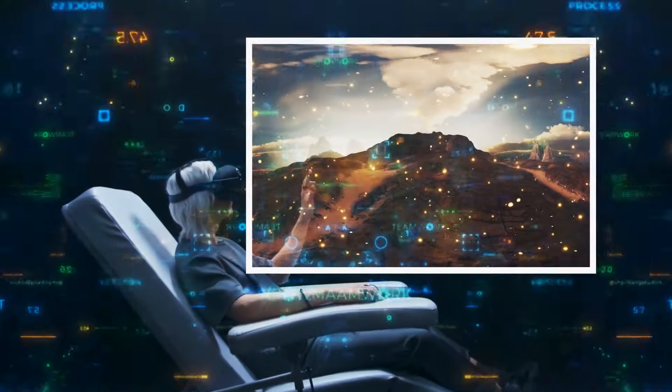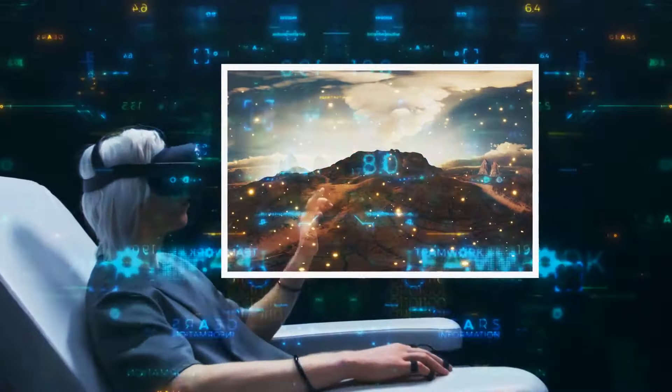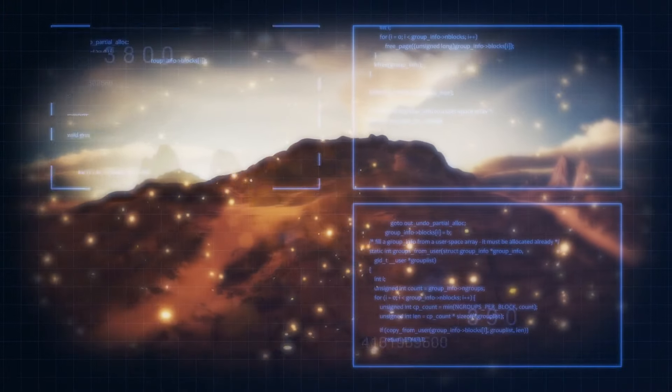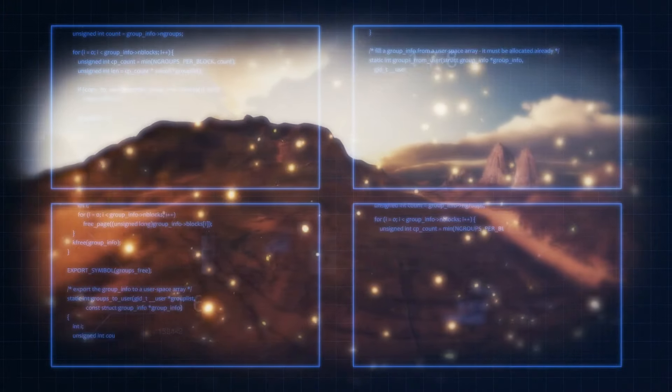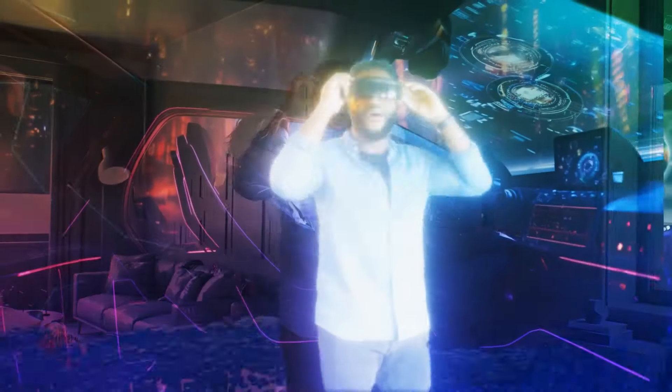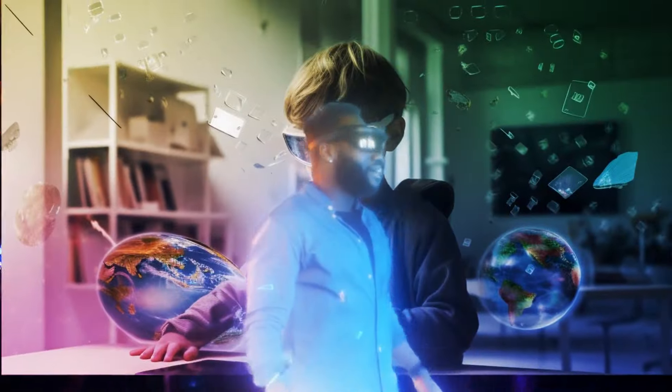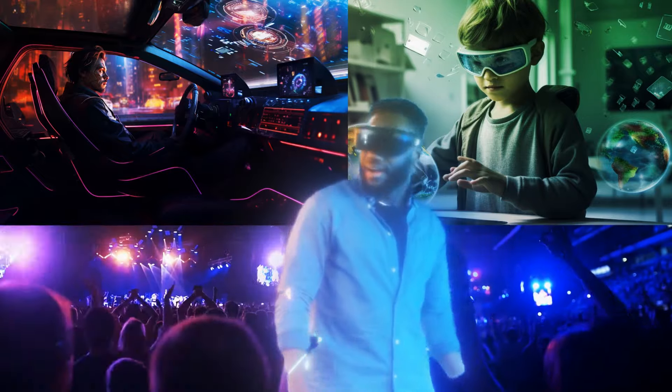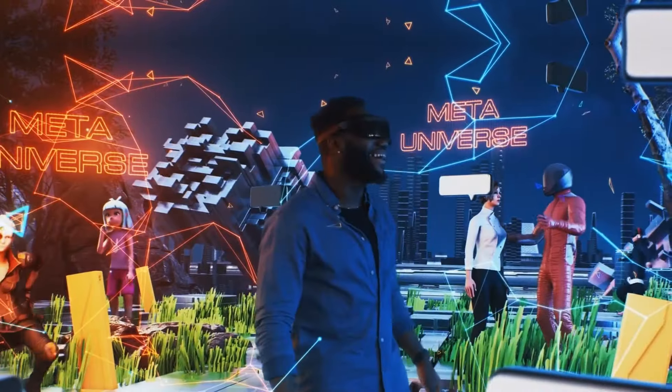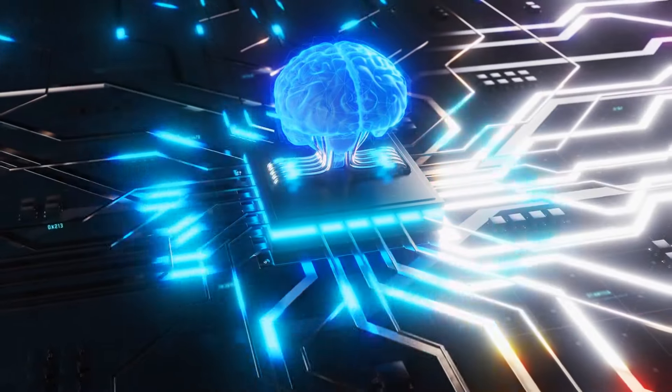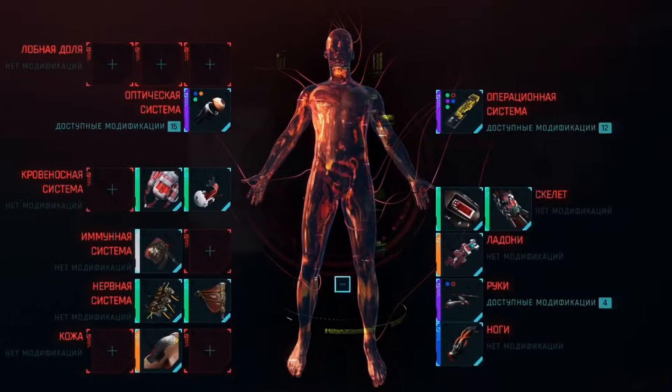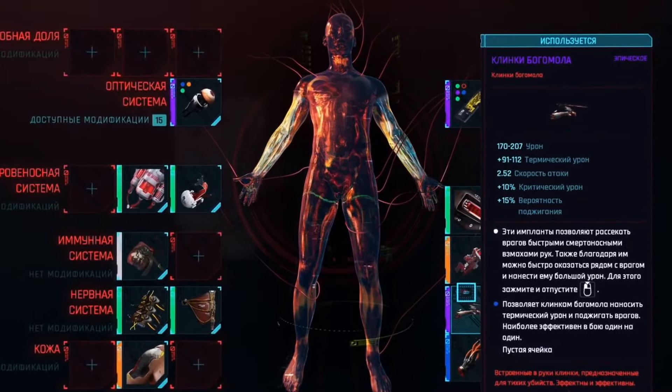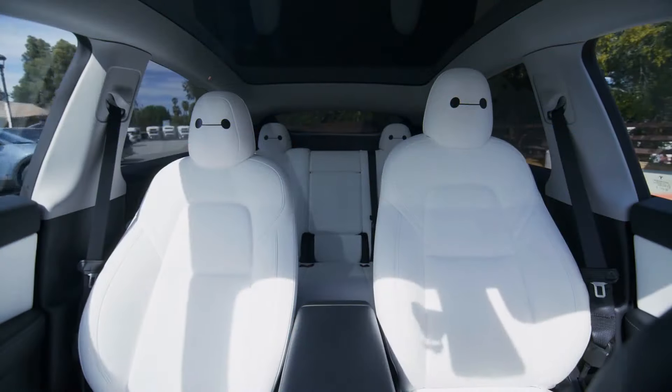Next up, smart clothes. In cyberpunk video games, people are rocking these stylish garments that not only look cool, but also offer some serious protection. We're not quite there yet, but smart clothes are becoming a thing in our world too. You've probably heard of smart watches and fitness trackers, right? Well, imagine clothing that can monitor your body's movements, suggest healthy habits, and adjust your body temperature. Some fashion brands are already exploring this exciting field.